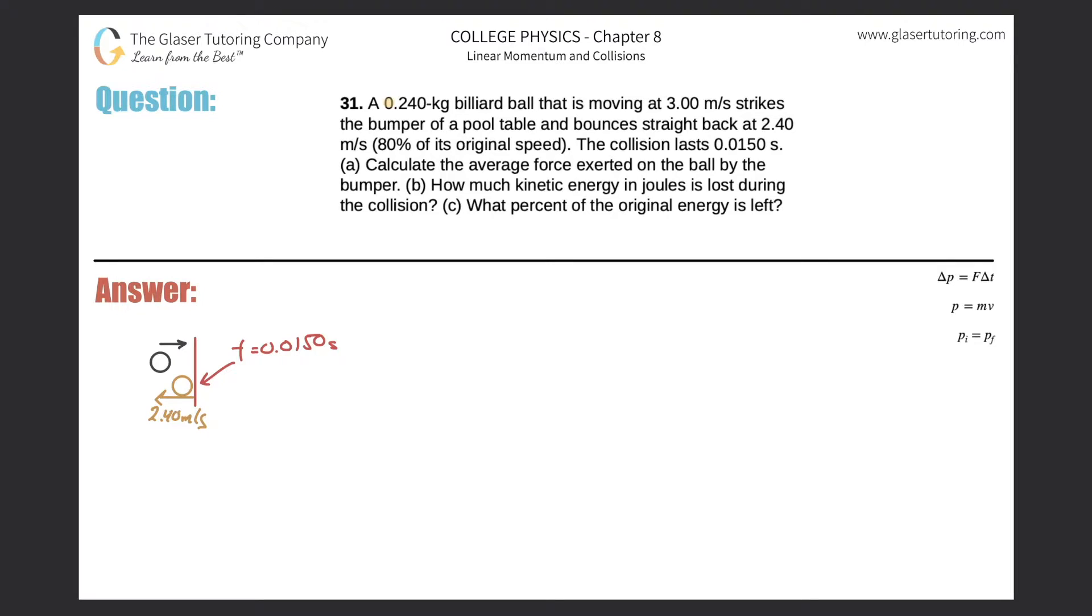Number 31: a 0.24 kilogram billiard ball that is moving at 3 meters per second strikes the bumper of a pool table and bounces straight back at 2.4 meters per second, which is 80% of its original speed. The collision lasts 0.015 seconds. Calculate the average force exerted on the ball by the bumper.